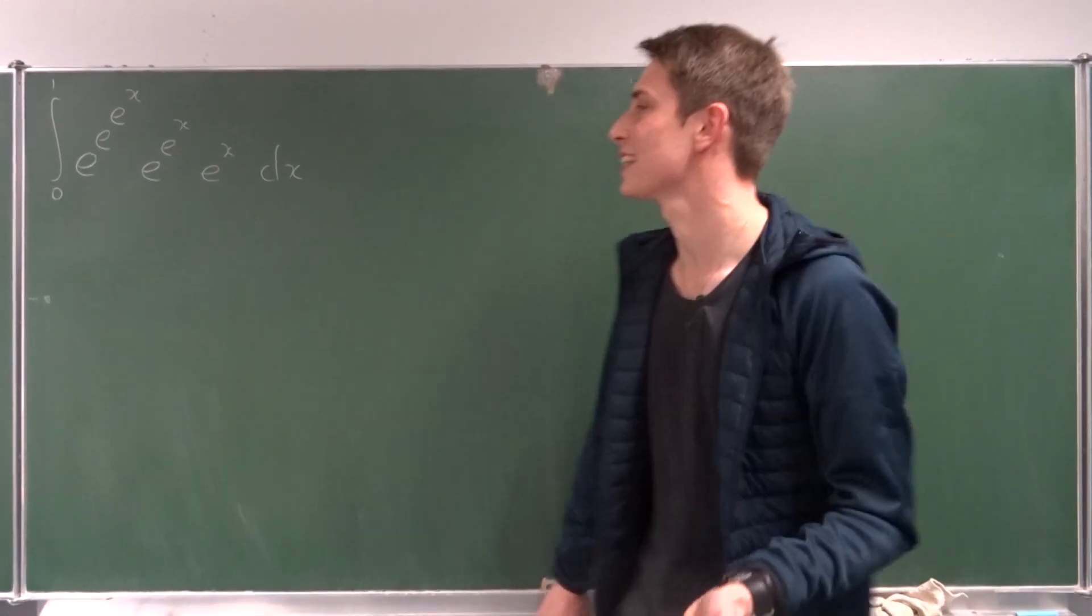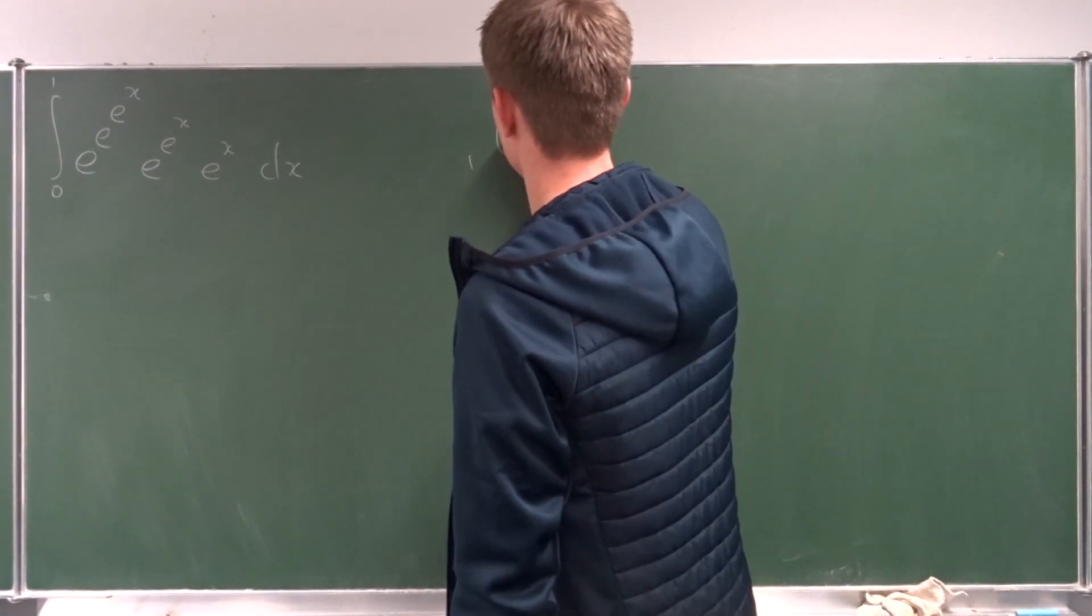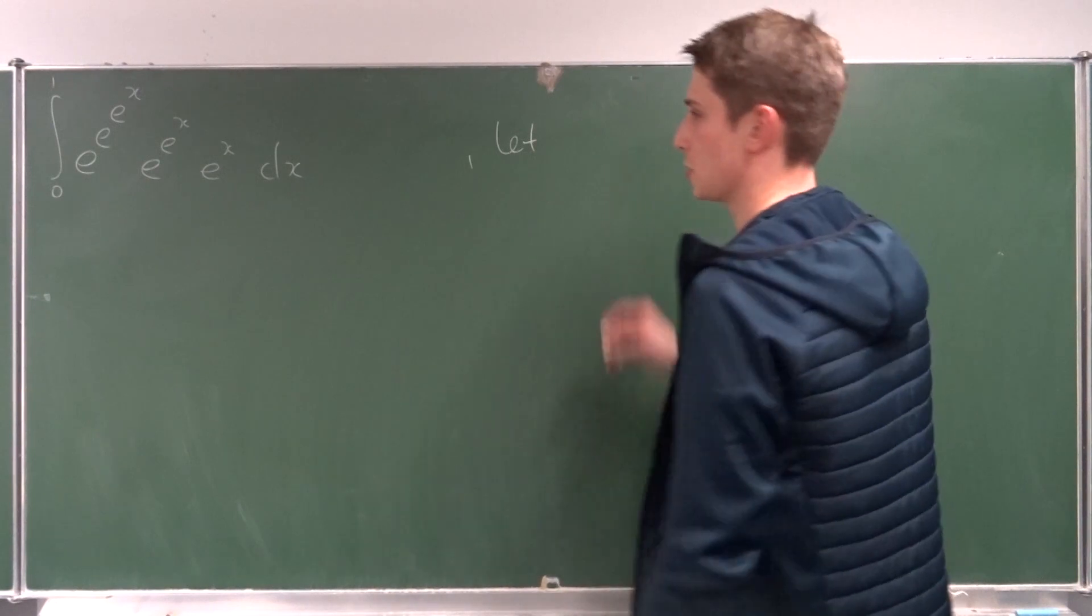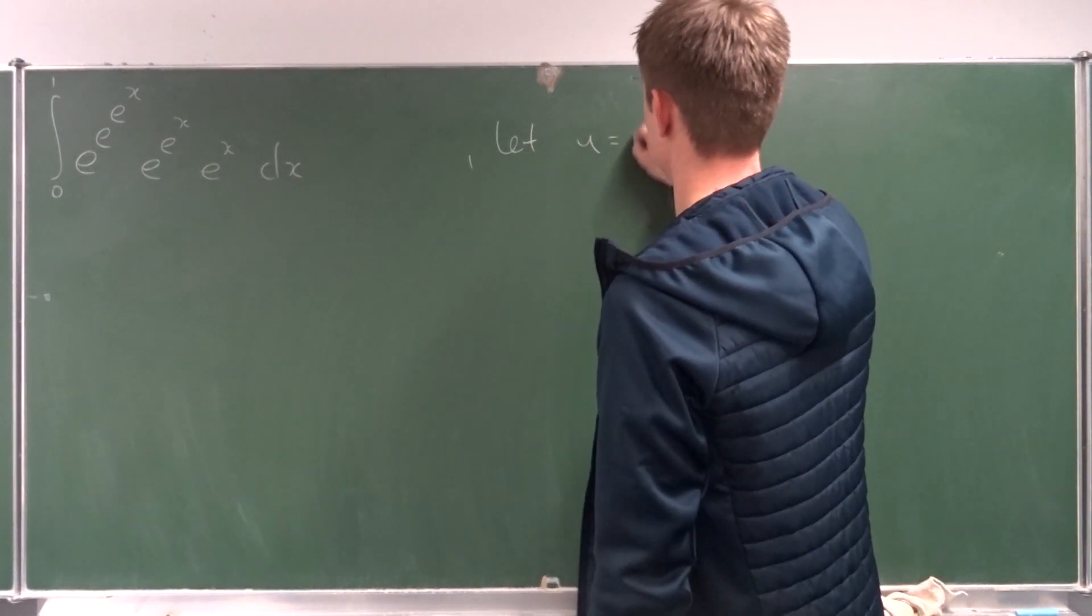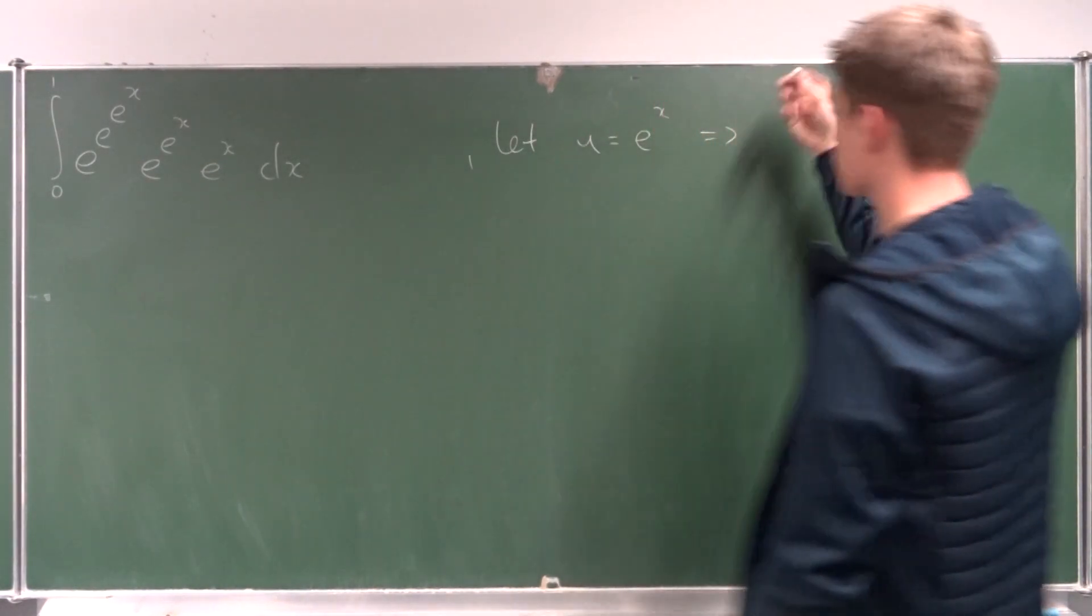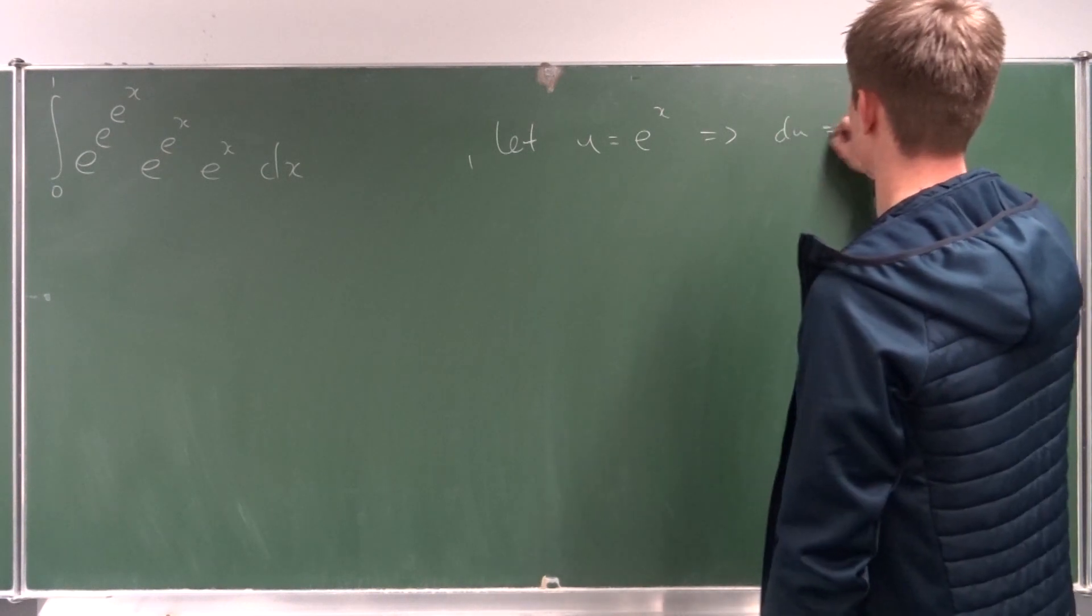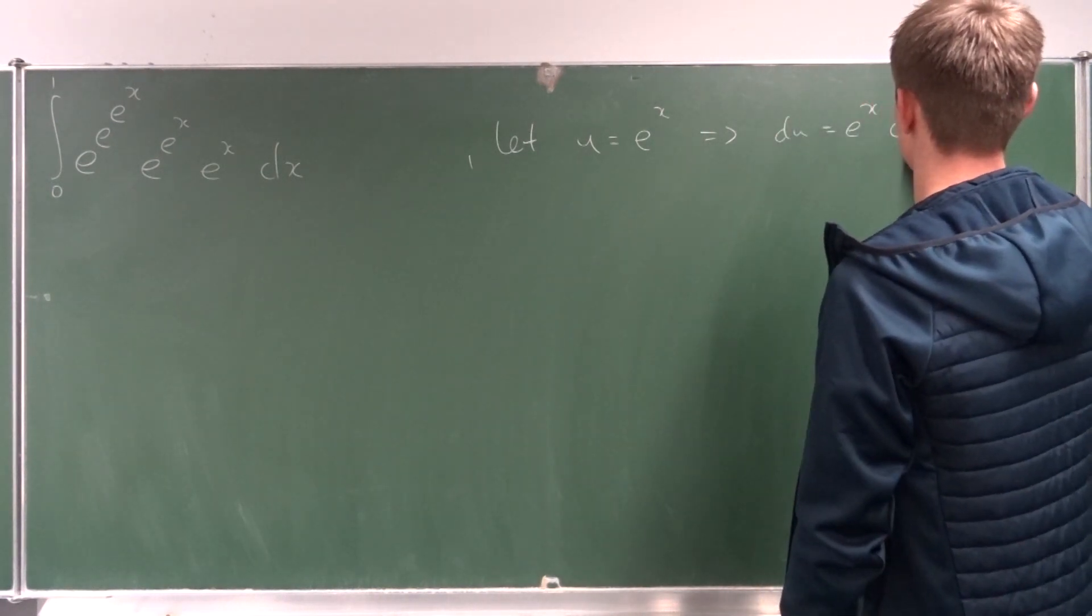So, I hope you like this. Let's start. We are going to start off with a u substitution. So, let's set u equal to e to the x. So, that means that du is just e to the x dx.